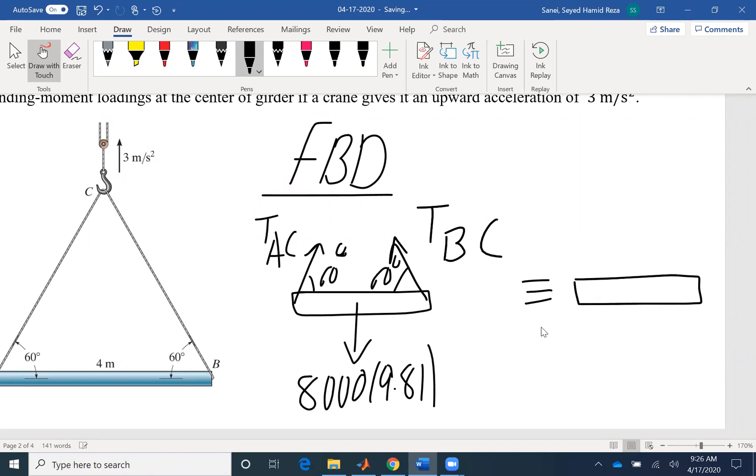We also have a kinetic diagram. For kinetic problems, you always need to draw a kinetic diagram as well, which shows you your acceleration. The acceleration that we have here is just going upward. So MA, mass 8,000, linear acceleration A is 3.